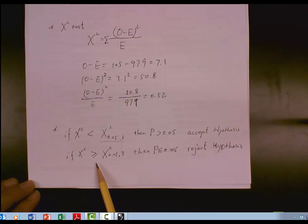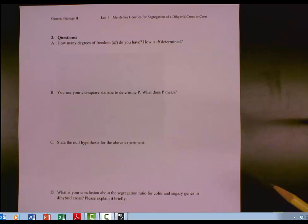if chi-square greater or equals the standard value, then the probability of fate will be smaller than or equal 0.05. We reject the hypothesis, means the observed data does not fit 9:3:3:1 ratio of independent assortment.